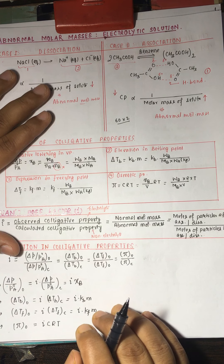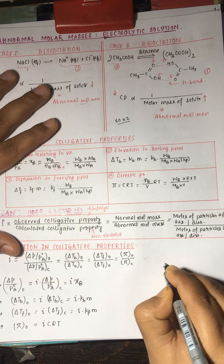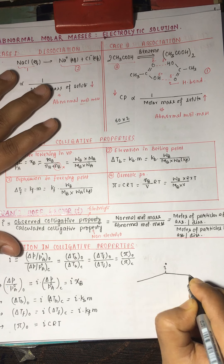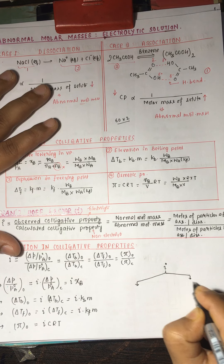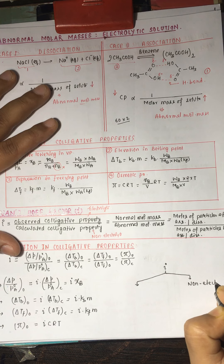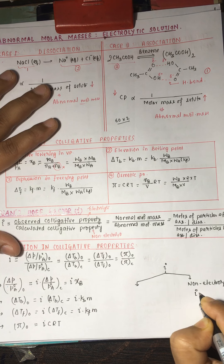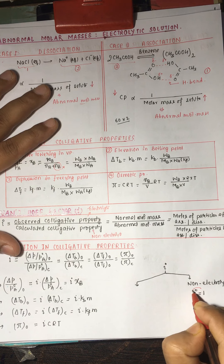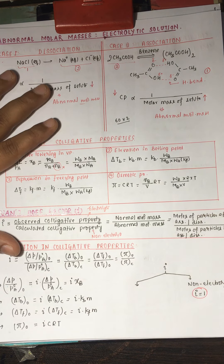So i is a correction term introduced by van't Hoff. For a non-electrolyte, i is equal to 1 — there is no dissociation or association. If the solution is electrolytic, then there are two cases: dissociation and association.